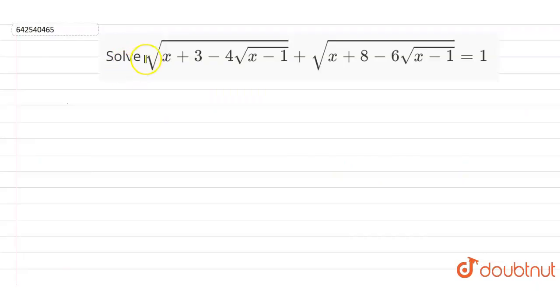My question is: solve √(x + 3 − 4√(x − 1)) + √(x + 8 − 6√(x − 1)) = 1.